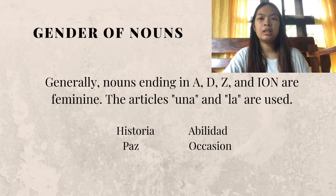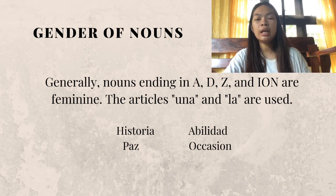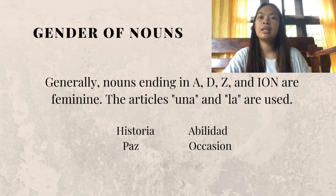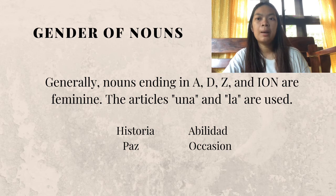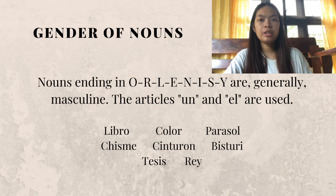There are rules that will help us determine the gender of nouns. Generally, nouns ending in A, D, Z, and -yon are feminine, and the articles una and la are used. Historia, Habilidad, Paz, and Ocasion are some examples of feminine nouns.